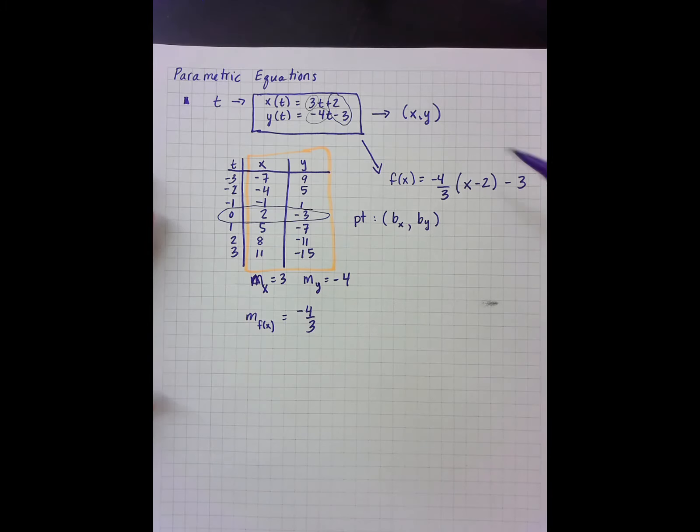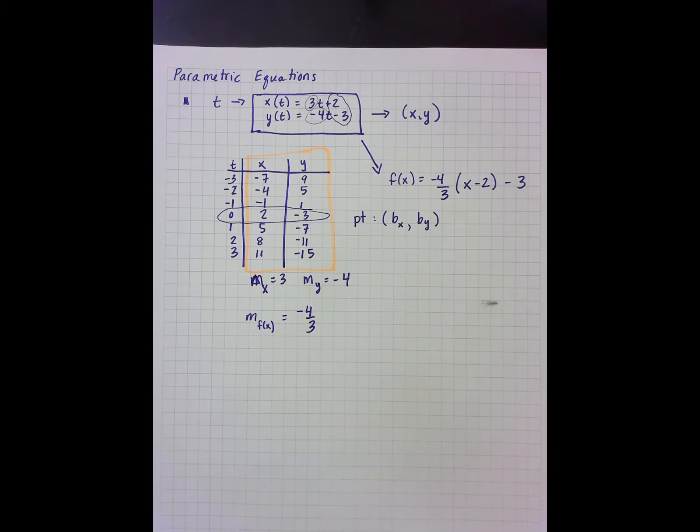And so I can write the function in terms of x and y from a parametric function where both the x and the y are linear by looking at the slopes and looking at the points given, the y intercepts.